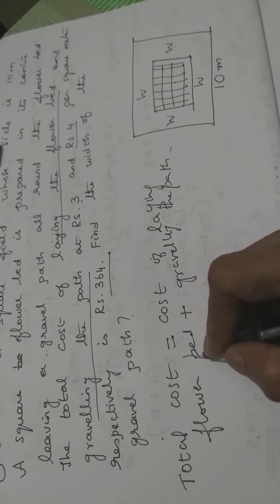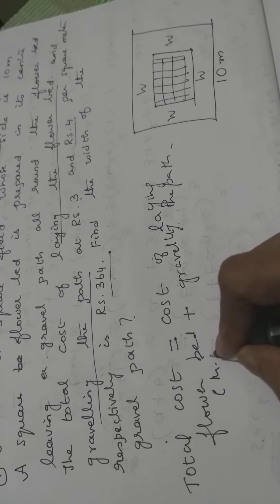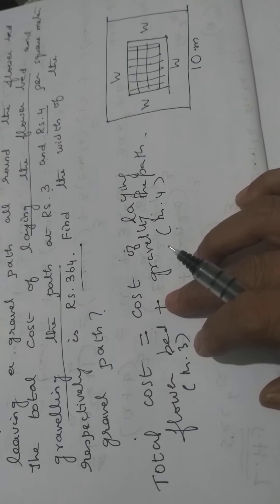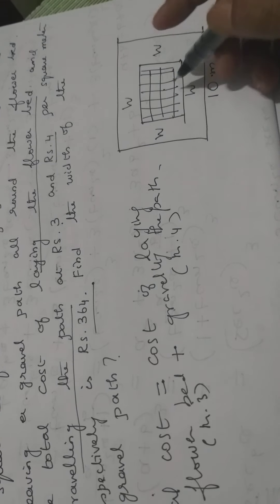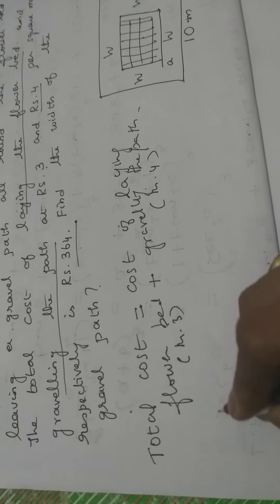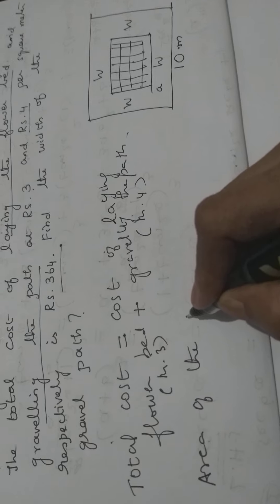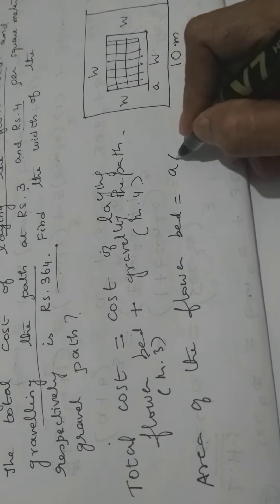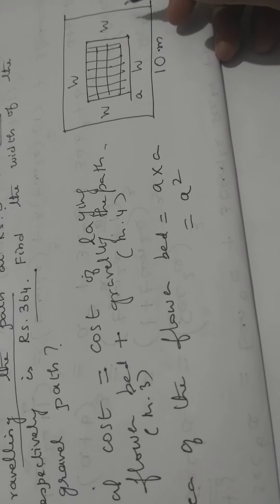The cost of laying the path is ₹4 per square meter and laying the flower bed is ₹3 per square meter. First, we have to find the cost of laying the flower bed. The side of the flower bed is not given, so we will take it as A. The area of the flower bed — it is square shaped — so area equals A × A, which is A squared.